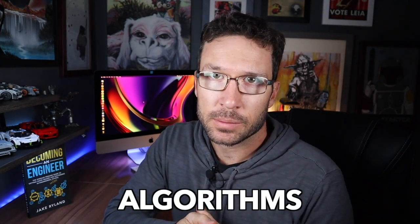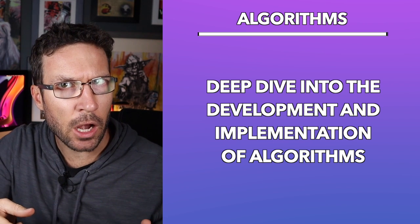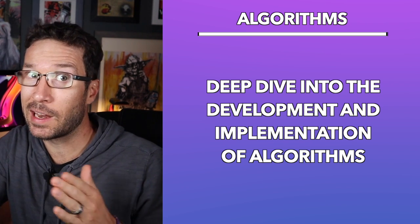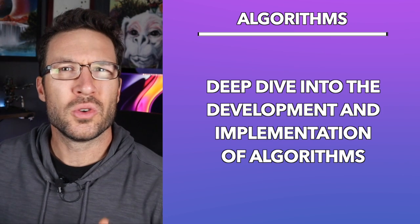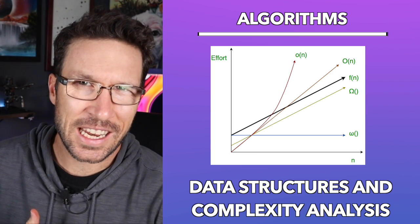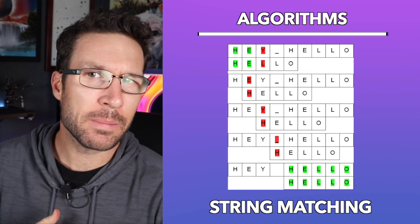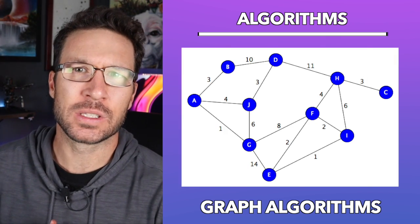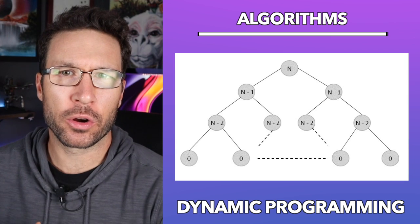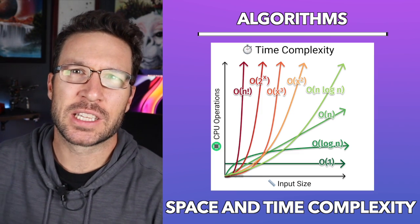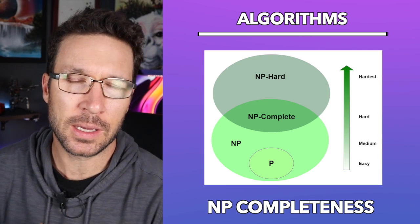Next up we have algorithms. In this course you're really going to dive a lot deeper into the study of algorithms and how they are developed and implemented. Topics include data structures and complexity analysis, balanced trees, heaps, hash tables, string matching, graph algorithms, external sorting and searching, dynamic programming, space and time complexity, complexity hierarchies, and NP completeness.